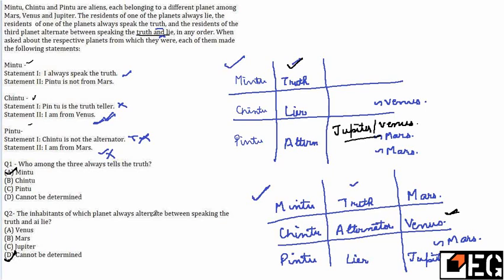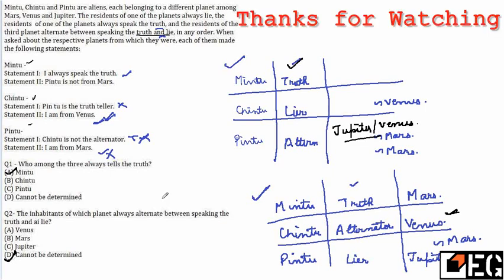I hope you understood how to approach these types of puzzles. The basic method is: choose one statement, assume that person is truthful, then check for the other statements and try to correlate — you will be able to solve these types of puzzles. We will be posting a lot of sets in coming days, so subscribe to our YouTube channel to get notifications of our LRDA puzzles. Thanks and happy learning.